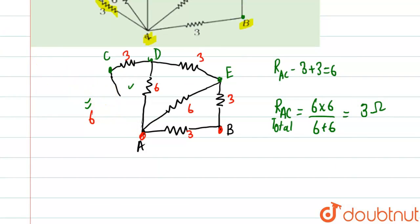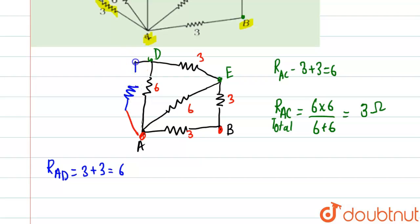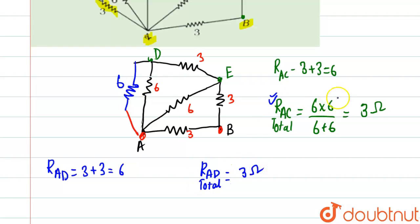We replaced it with a 3 ohm resistor. Now this 3 ohm and the adjacent 3 ohm are again in series, so R_AD equals 3 plus 3, which equals 6 ohms. We place one 6 ohm resistor. Again this 6 ohm and the other 6 ohm are connected in parallel, so R_AD total equals 3 ohms — the same calculation as before.